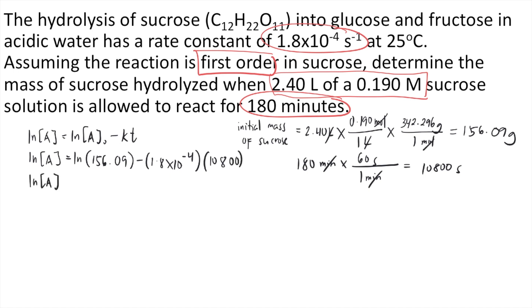If you solve the right side of the equation, that's ln of 156.09 minus 1.8 times 10 to the negative 4 times 10,800, that's approximately 3.1064. If you want to solve for the final amount, to remove the ln, you do E raised to 3.1064. E raised to 3.1064, that's equal to 22.34. Since we're talking about the final amount and we're working with grams, the unit is grams.